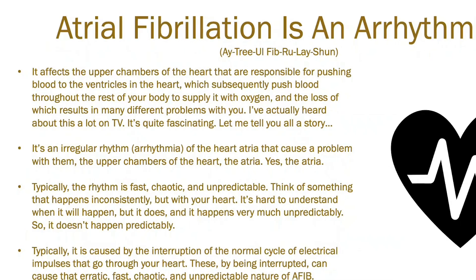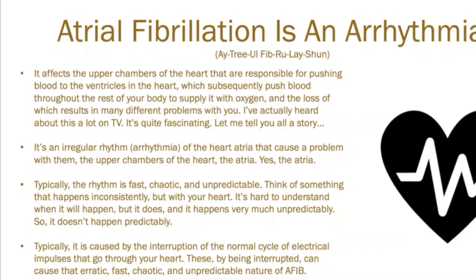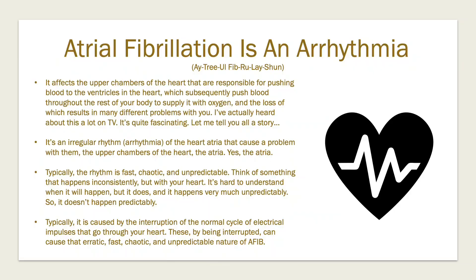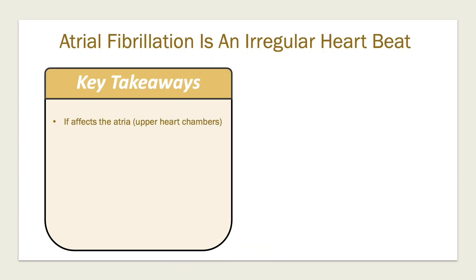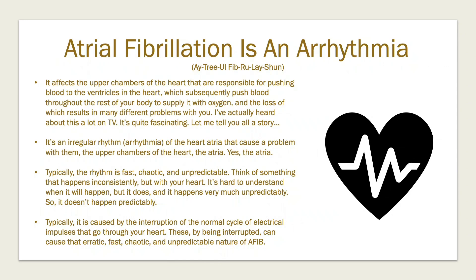For instance, the first bullet point says it affects the upper chambers of the heart that are responsible for pushing the blood to the ventricles and so on. And so what you can do is just take your tablet and summarize by writing: atrial fibrillation affects the atria. Maybe even add that they are the upper chambers of the heart if it's a new term for you. And boom, you're done. That massive segment of text can be translated into a tiny segment of your notes. And all the context and extra information on the slide that can be helpful to understand in the beginning can just be summarized in that small sentence.